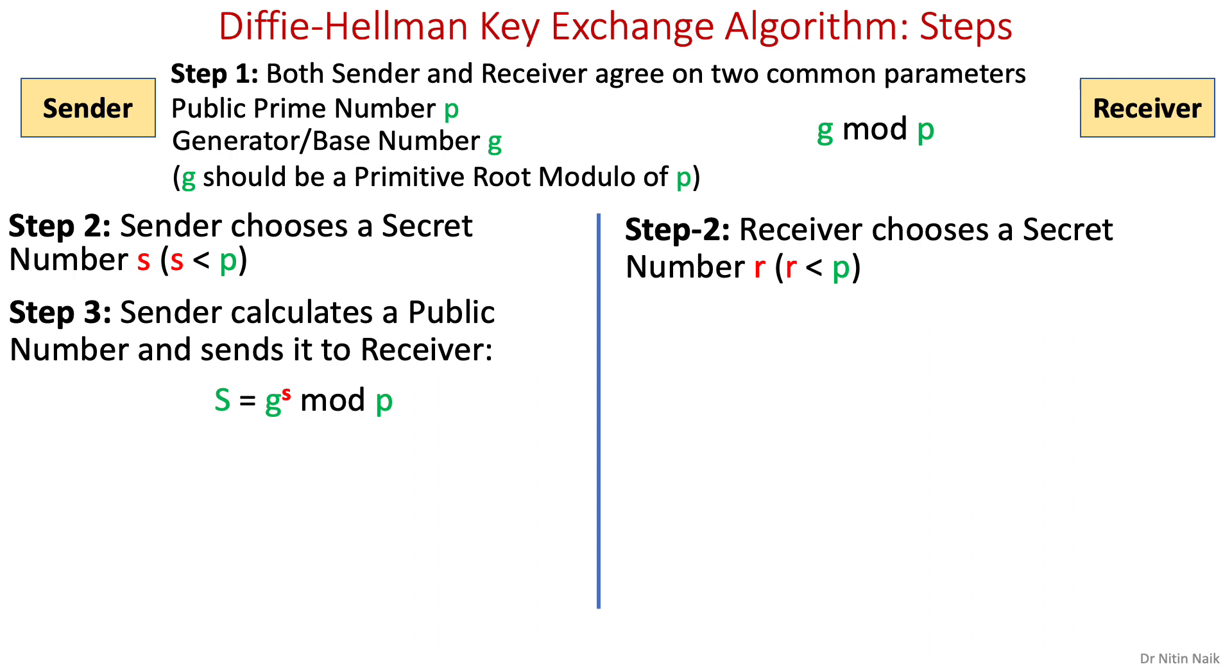In step three, we calculate a public number. Sender calculates a public number, here uppercase S, using their secret number in g mod p formula and sends it to receiver.